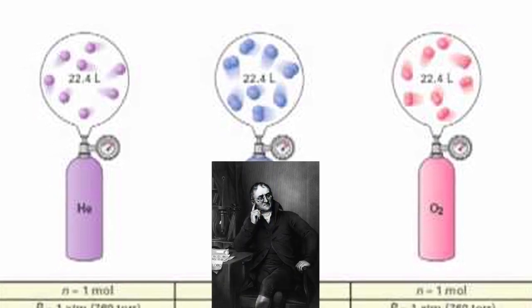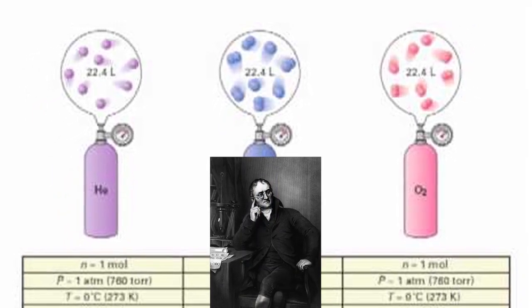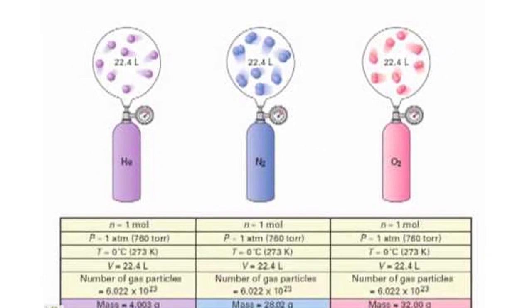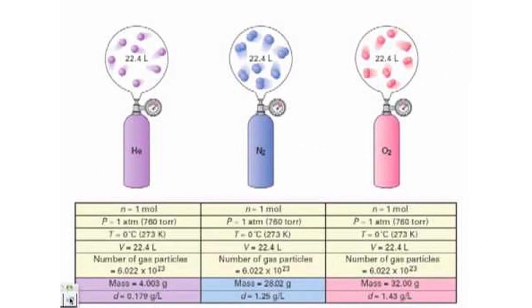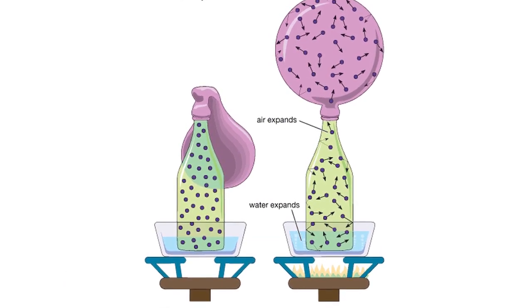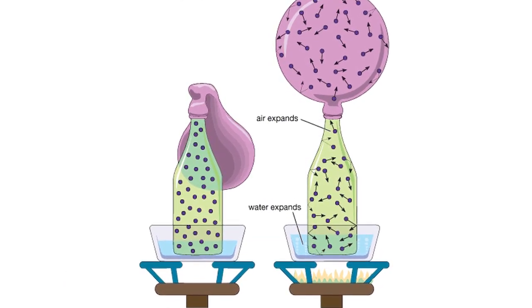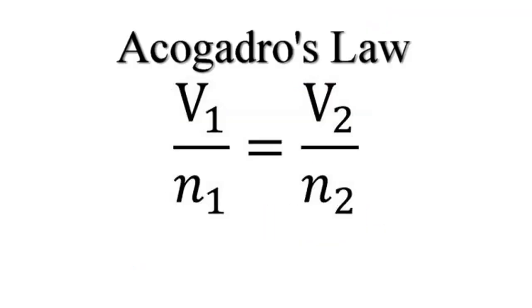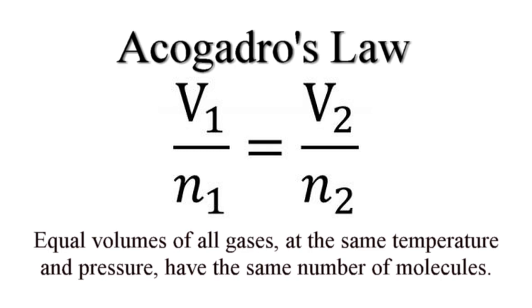In 1811, Amadeo Avogadro hypothesized that two given samples of an ideal gas of the same volume and at the same temperature and pressure contain the same number of molecules. Although in time this hypothesis was shown to be inaccurate, it did give a very close and practical approximation of the behavior of ideal gases. Avogadro's law is stated as, equal volumes of all gases at the same temperature and pressure have the same number of molecules.